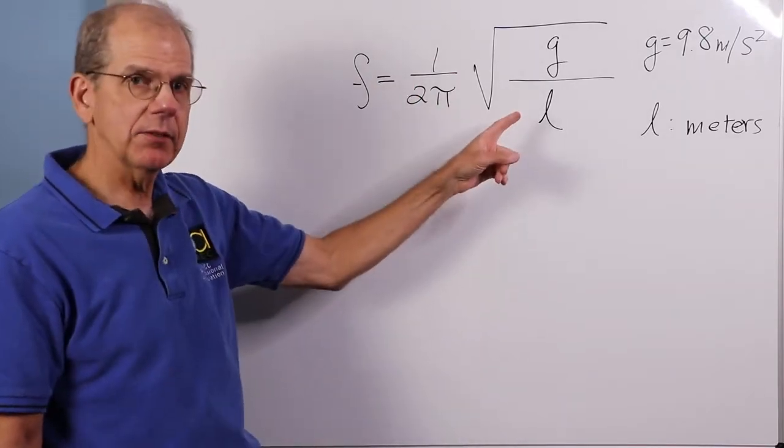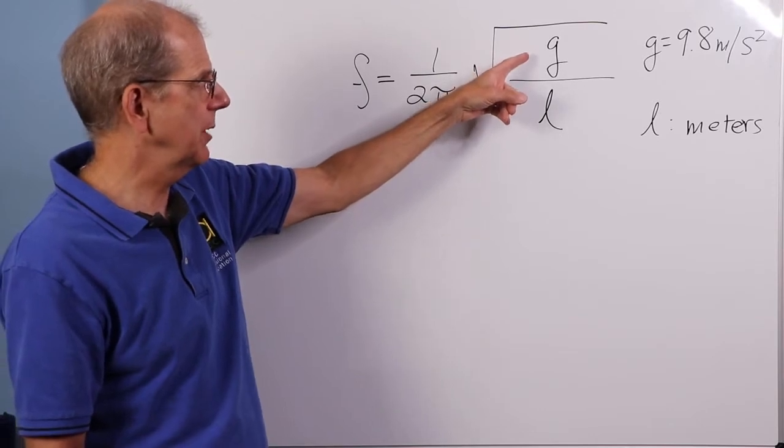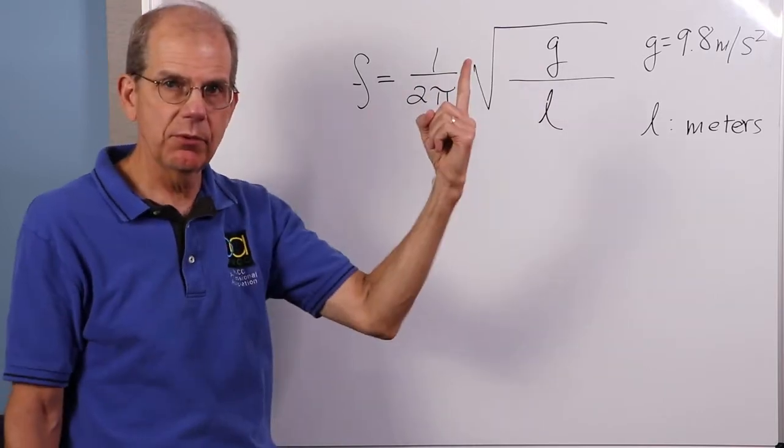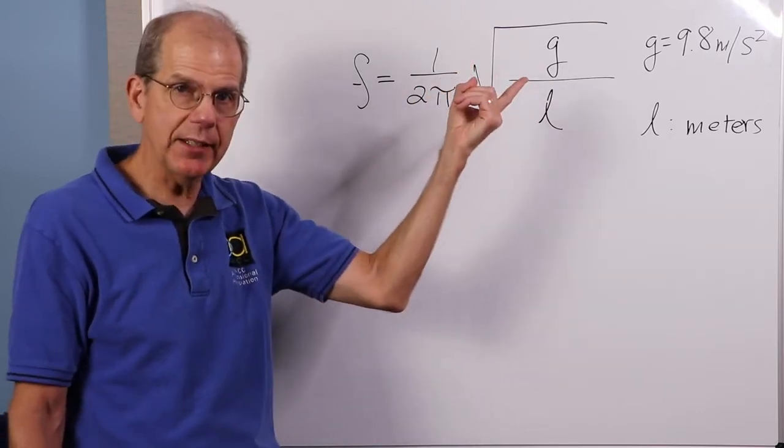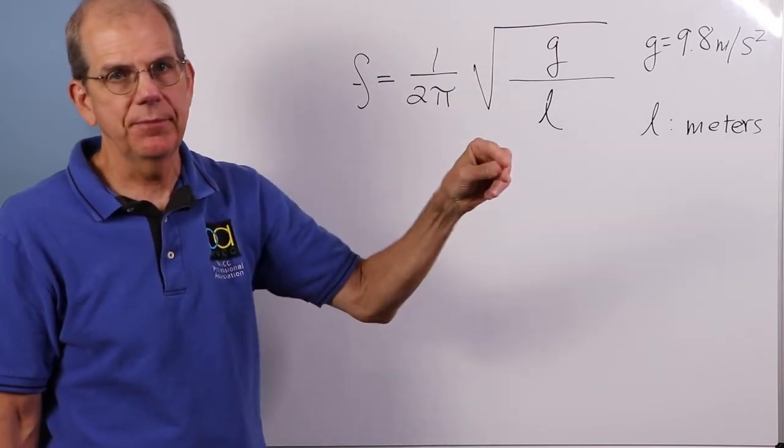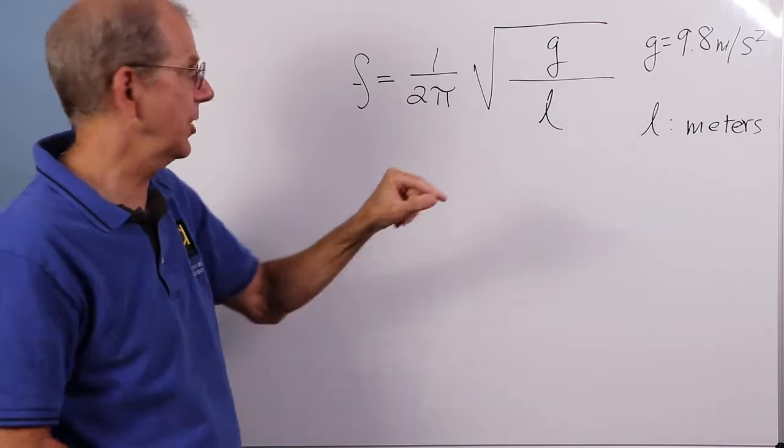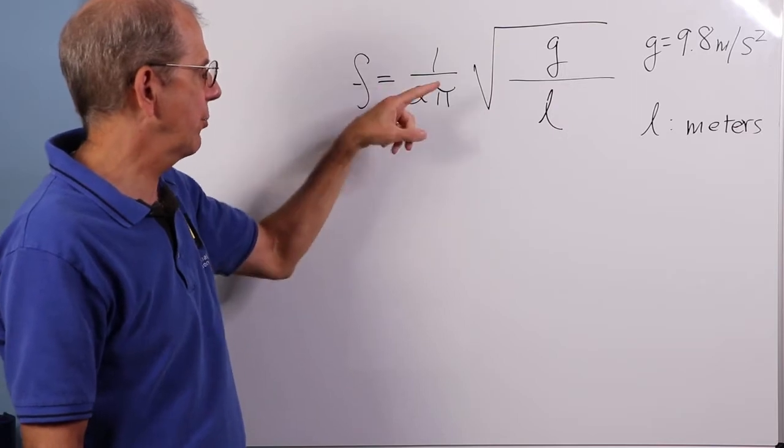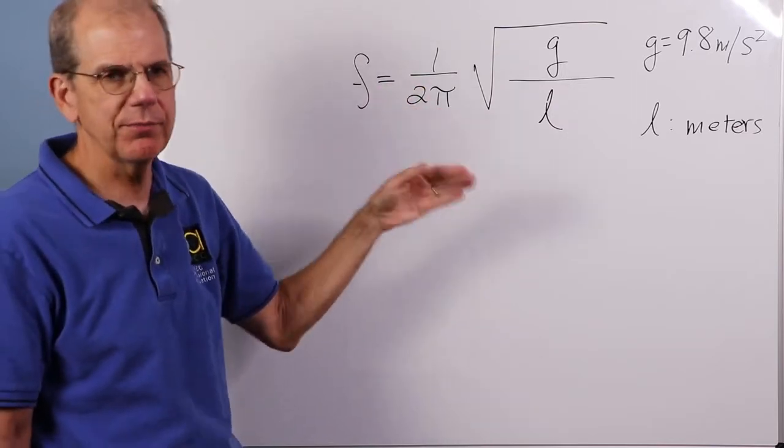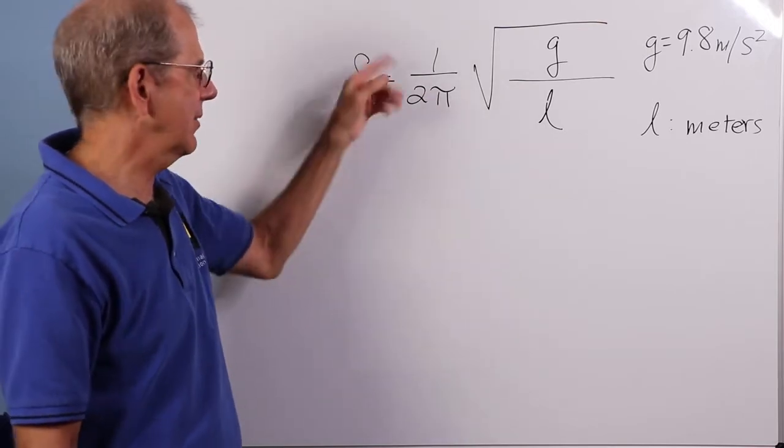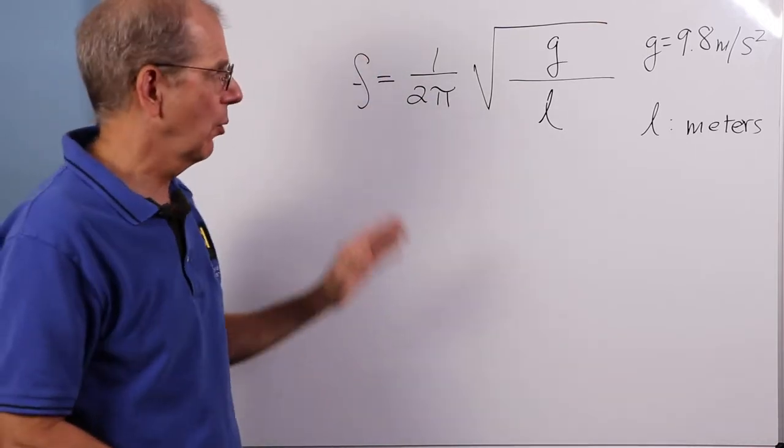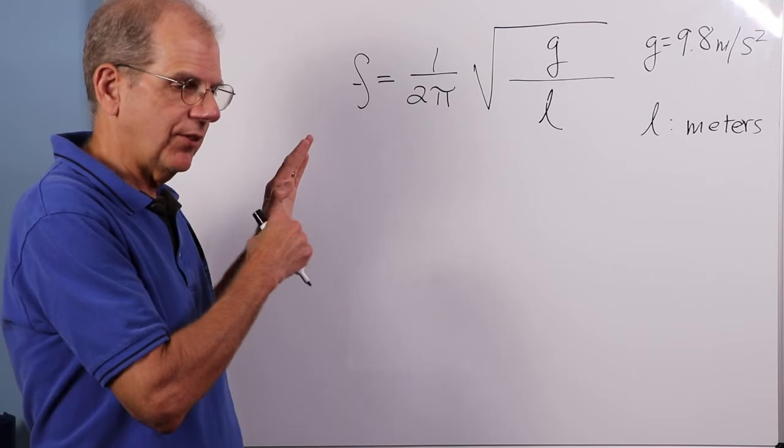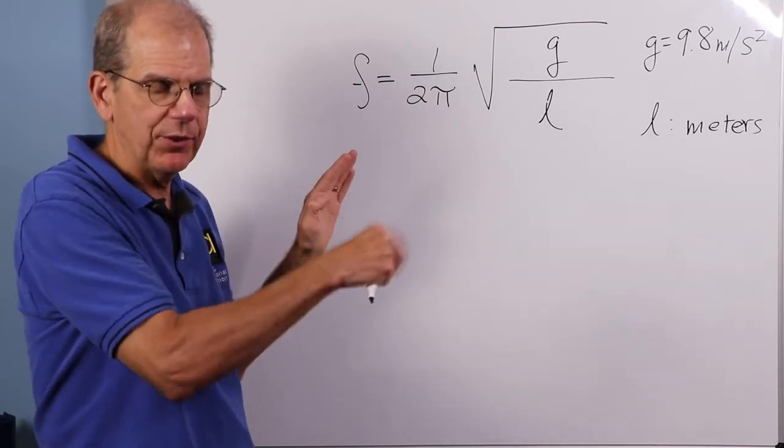And if you plug that in here, you have 9.8 meters per second squared for the acceleration, a length of 1, so 9.8 over 1 is 9.8. Take the square root of 9.8, it's a little over 3. Just a little over 3. I'm just doing an approximation here. And of course, 1 over 2π. So I multiply that by 3. In other words, 3 over 2π, and π is a little over 3, as I said. So the 3s just about cancel out, and you're left with a frequency of half a hertz. In other words, on a grandfather clock, the natural resonant frequency is 2 seconds, 0.5 hertz. 1 over 0.5 hertz is 2 seconds.